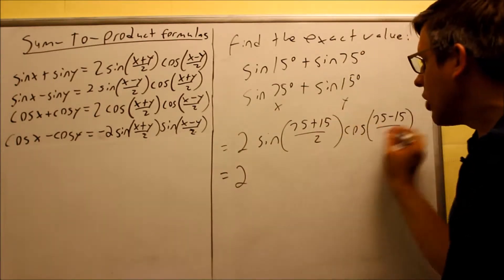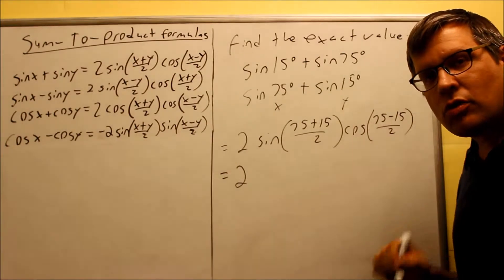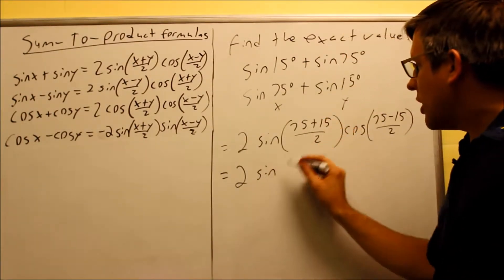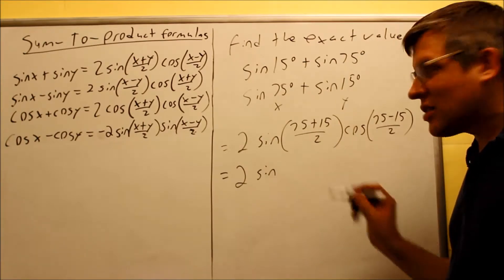We're going to simplify this and it will give us angles that are on our unit circle and we can get the answer. So we have 2 sine of 75 plus 15 over 2. That's 90 on top.